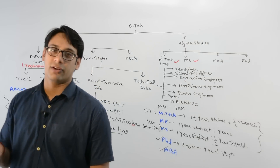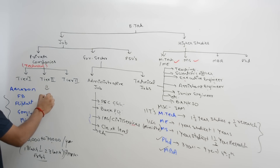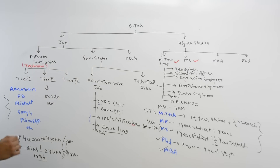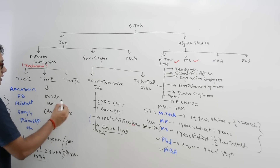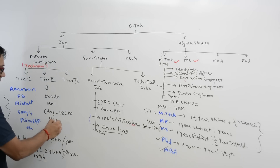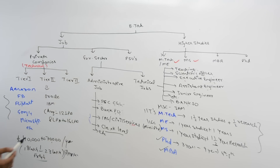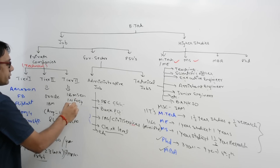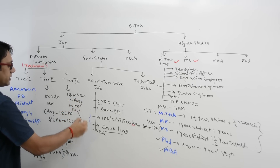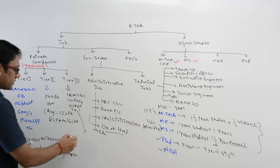Tier one companies are also called product-based companies because they develop their own products — for example, Amazon has its own product, and so does Microsoft. Tier two companies include Oracle and IBM. Tier two companies generally pay an average salary package of around 12 lakh rupees per annum, with salaries ranging from 8 lakhs to 16 lakhs per annum. Tier three companies are service-based companies such as IBM Services, Infosys, Wipro, and Tech Mahindra.